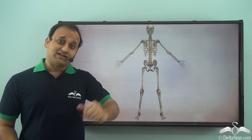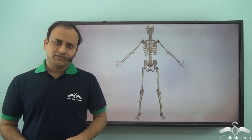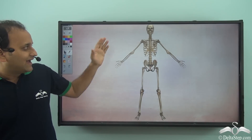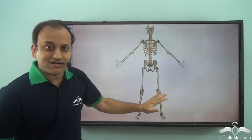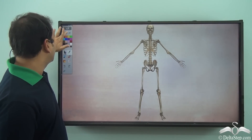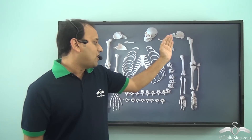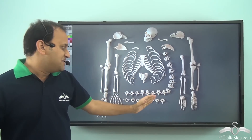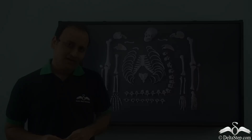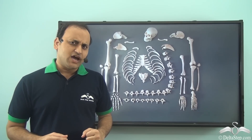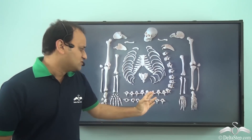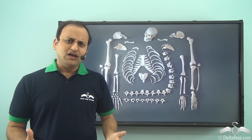This is our skeletal system. Now if you look closely, the entire thing is not a single structure — it is made up of a number of different bones. Now the question arises: why do we have so many different types of bones in our body?